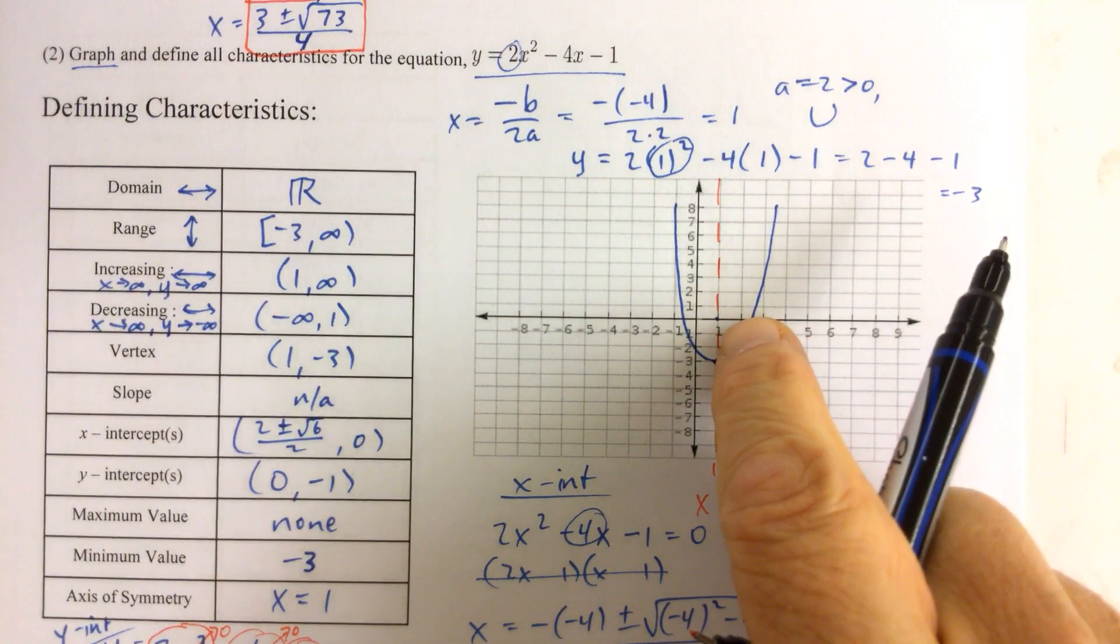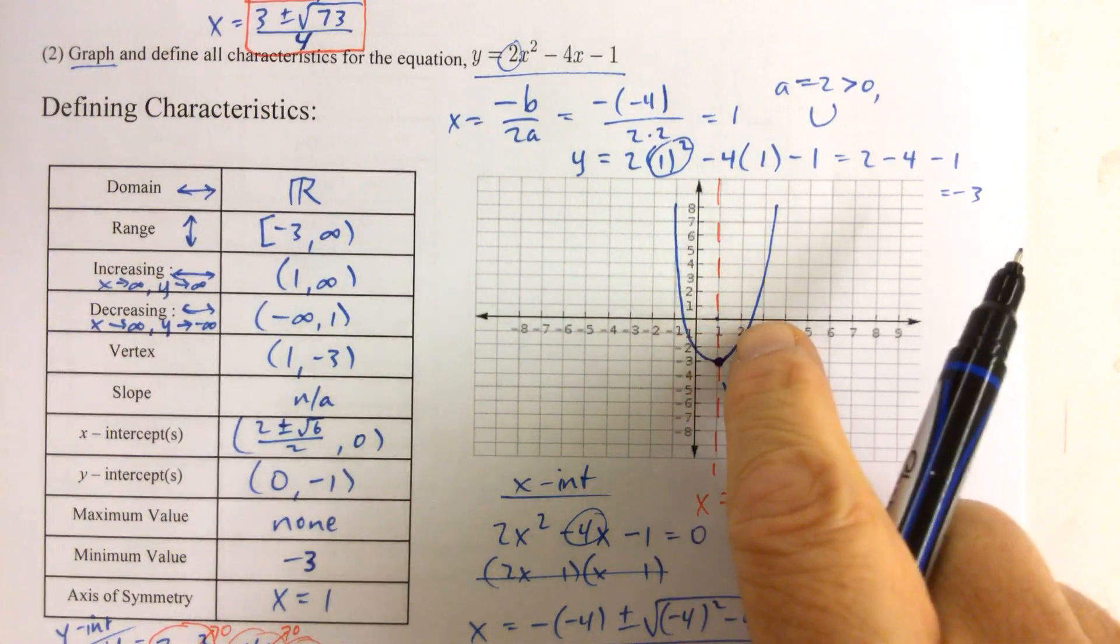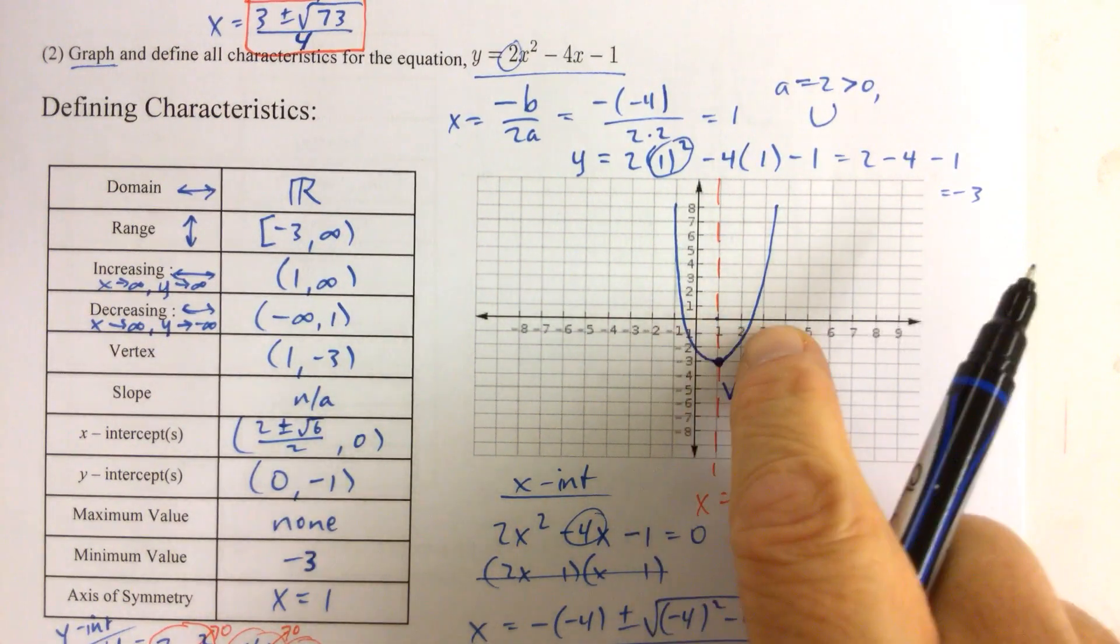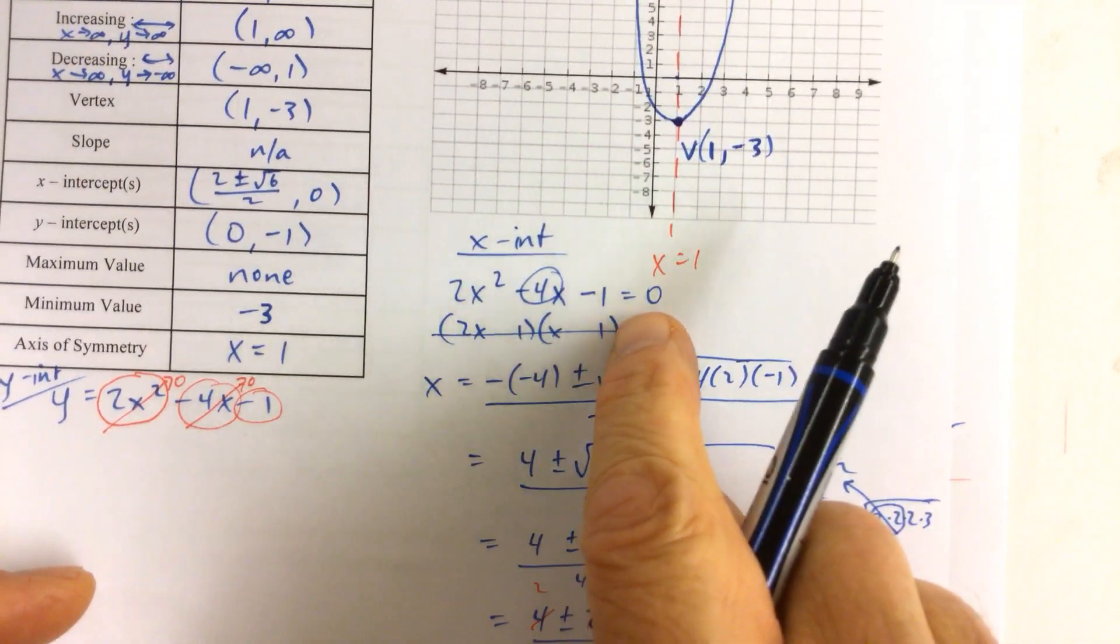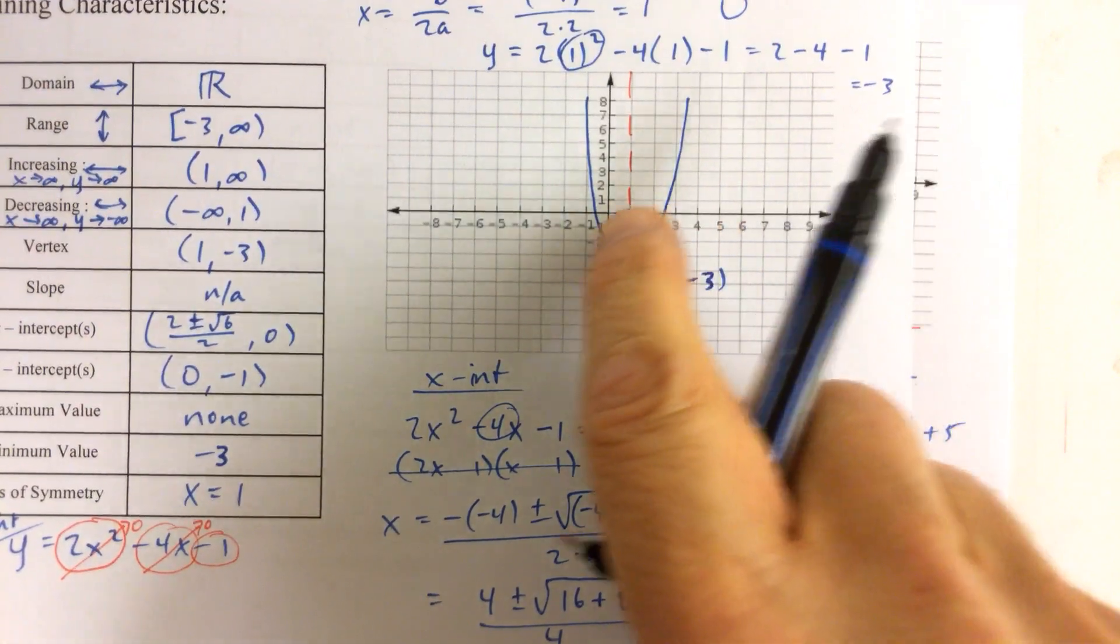That's 2 x-intercepts. And notice, if you look at the graph, the graph crosses the x-axis at two different points. That's why there's two solutions to this equation. Two solutions because the graph crosses the x-axis twice.